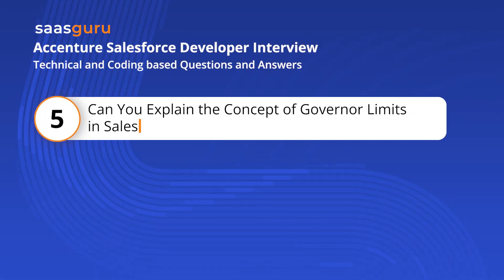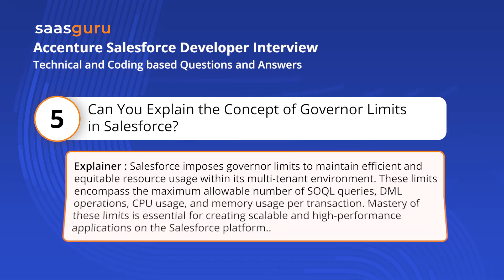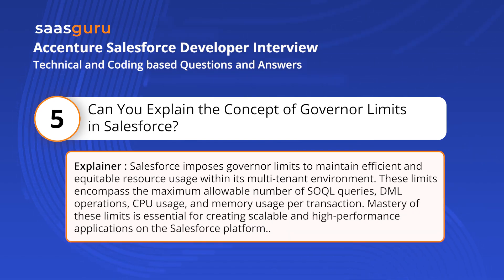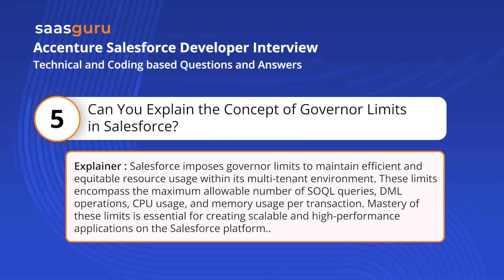Question 5: Can you explain the concept of governor limits in Salesforce? Salesforce imposes governor limits to maintain efficient and equitable resource usage within its multi-tenant environment. These limits encompass the maximum allowable number of SOQL queries, DML operations, CPU usage, and memory usage per transaction. Mastery of these limits is essential for creating scalable and high-performance applications on the Salesforce platform.